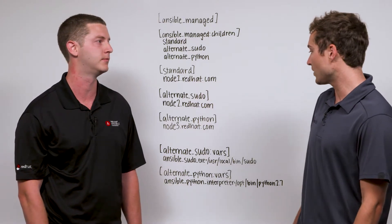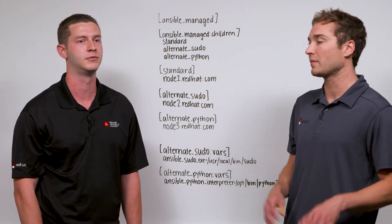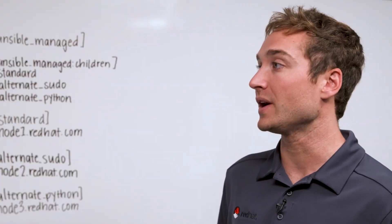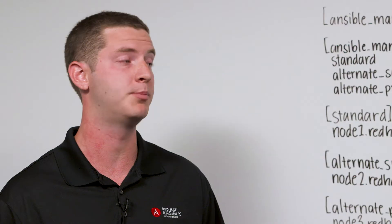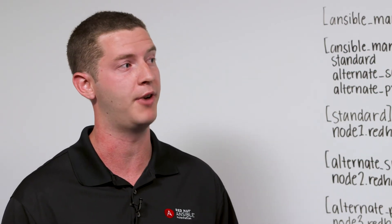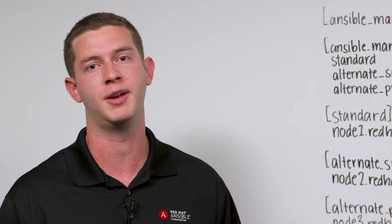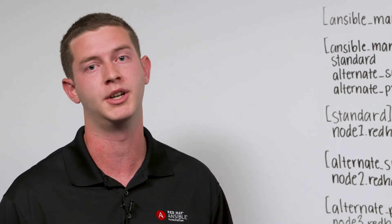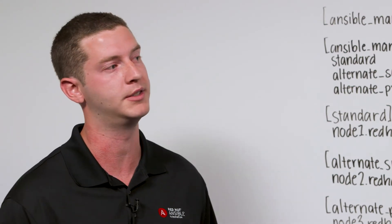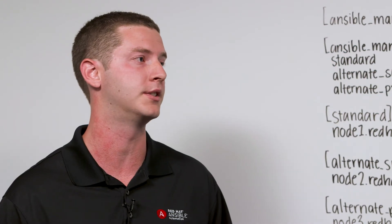So with the Ansible Python interpreter variable, we can specify where Python exists on our nodes. I see this Ansible sudo executable — what's that one for? Ansible by default connects to an operating system and runs a command as the user that ran it. But there are some times that you want to run a command as a different user, say the root user. So you need to specify the location of sudo on that operating system.